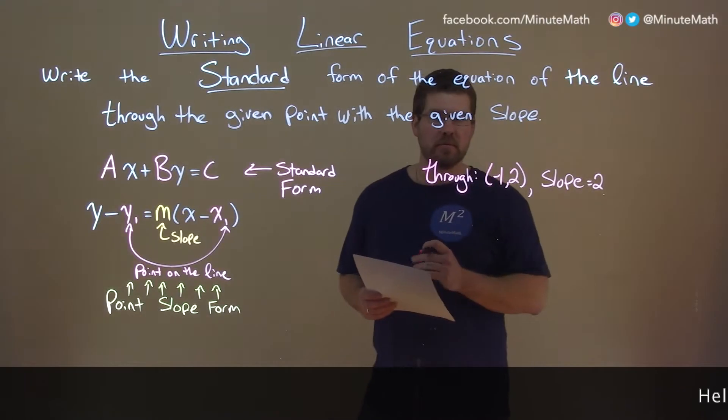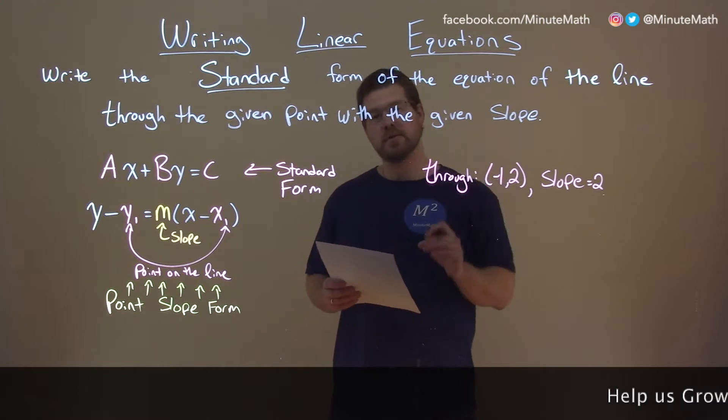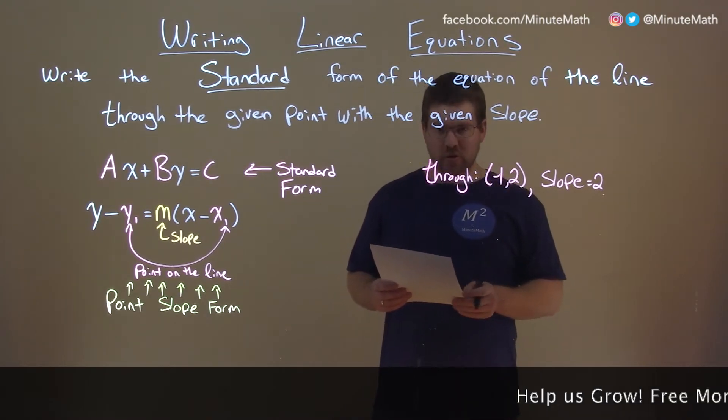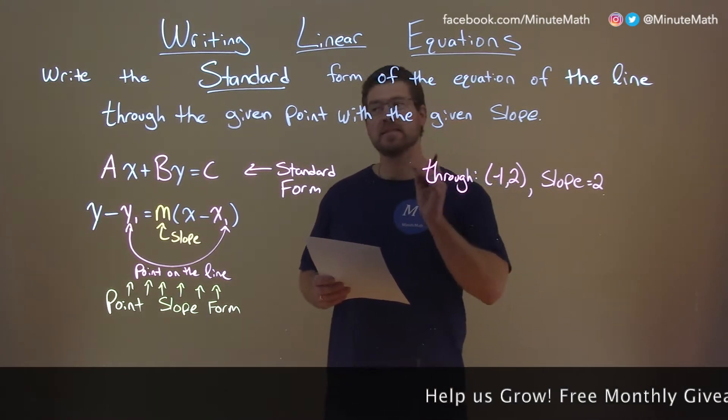If I was given this problem through (-1, 2) and our slope is 2, and we want to write this in standard form.